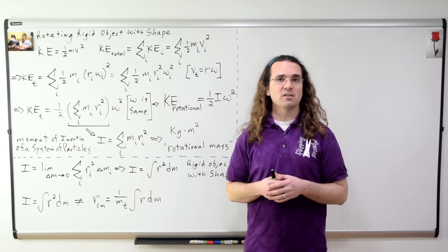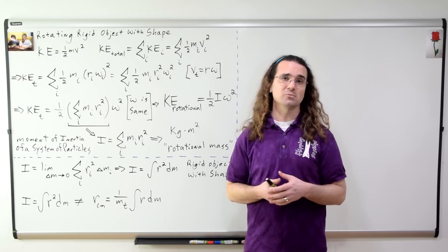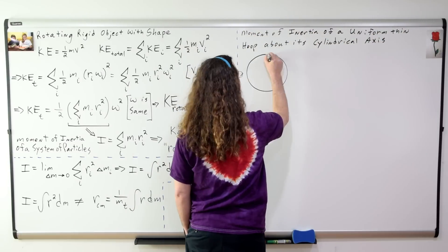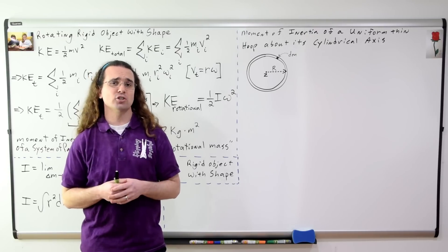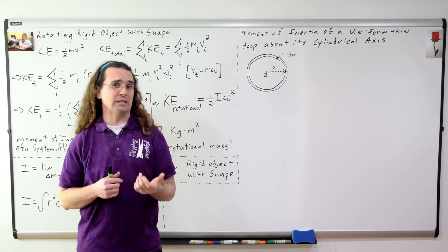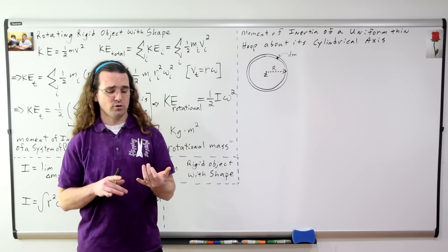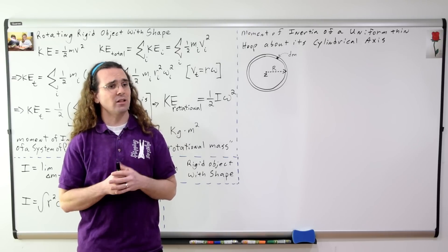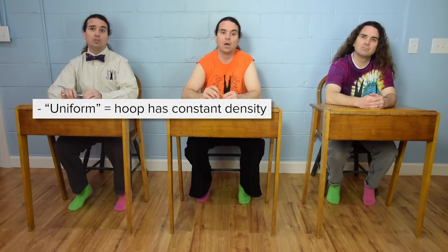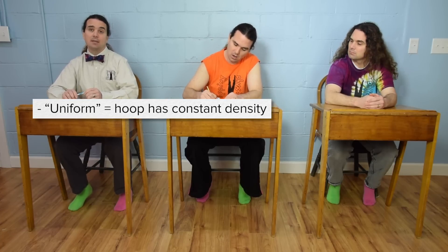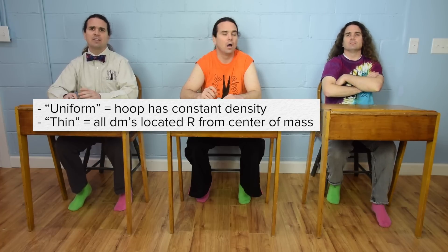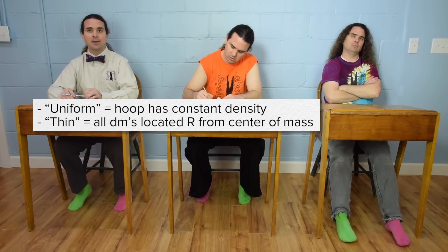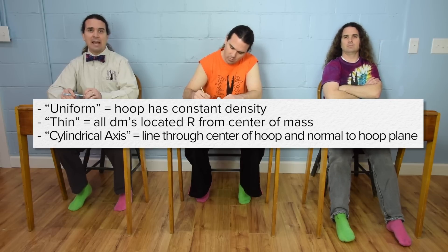Let's do several moment of inertia derivations. Let's start by deriving the moment of inertia of a uniform thin hoop about its cylindrical axis. Billy, please describe what uniform, thin, and cylindrical axis mean. Uniform means the density of the hoop is constant. Thin means the thickness of the hoop is small compared to its radius, so we can consider the entire hoop to be a distance capital R from its center. The cylindrical axis is the axis normal to the plane of the hoop right at its center, labeled z.